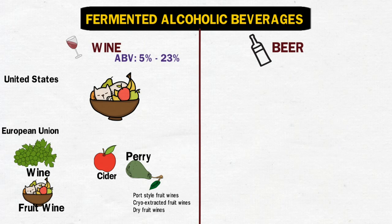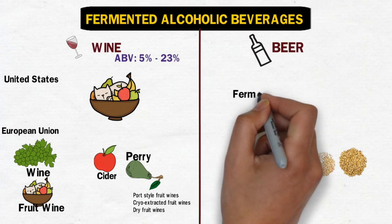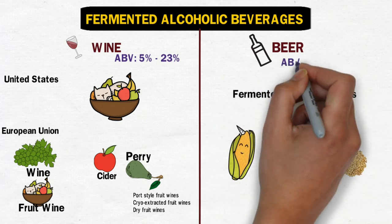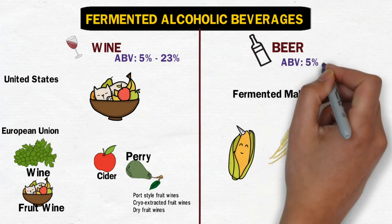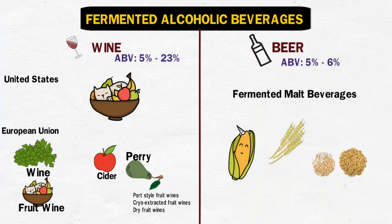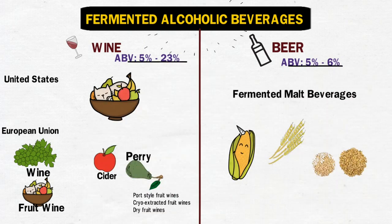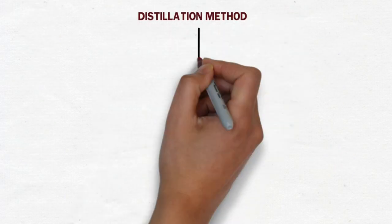Beer is prepared by fermentation of malted cereals such as corn, wheat, rye, or barley. These are generally called fermented malt beverages. For beer, the alcohol percentage is generally 5 to 6%, but may go up to 15% in some regions.